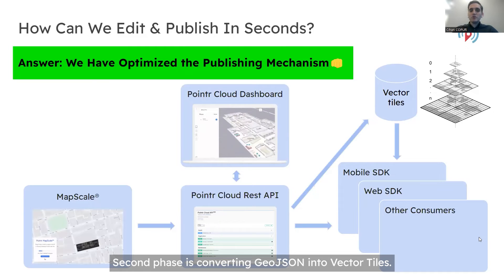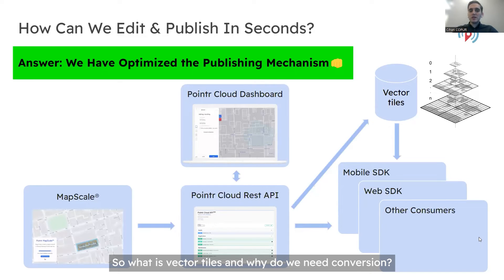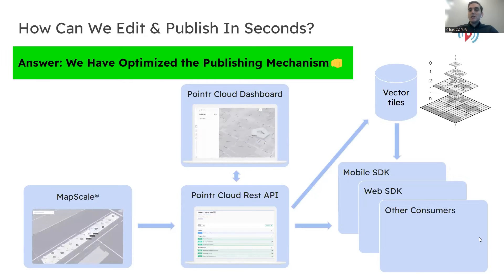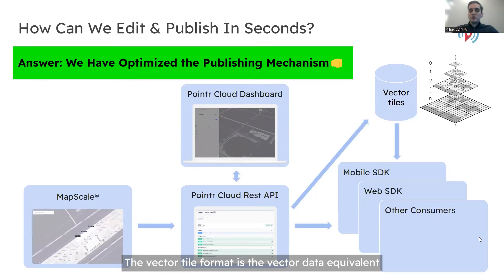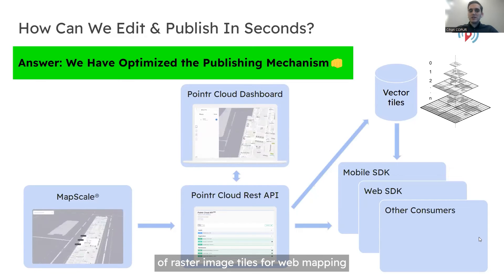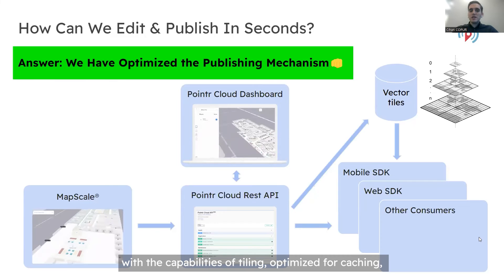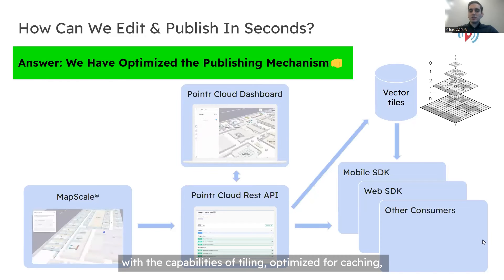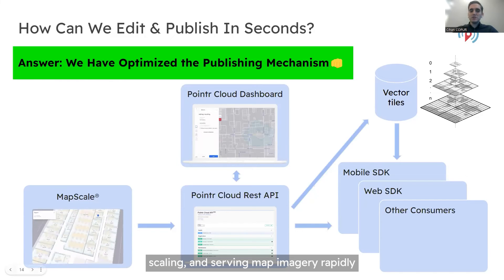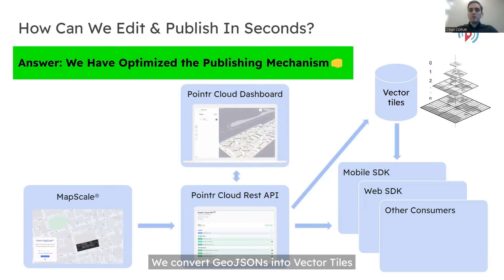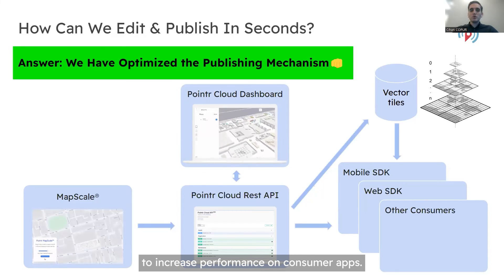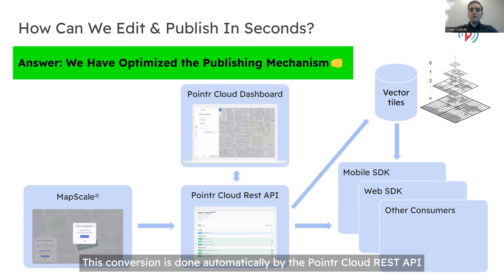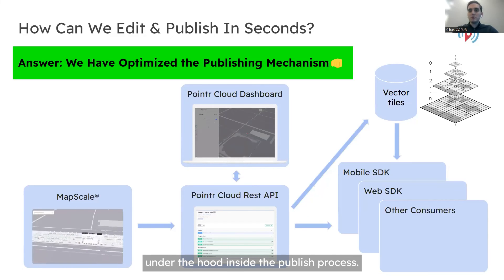The second phase is converting GeoJSON into vector tiles. The vector tile format is a vector data equivalent of raster image tiles for web mapping, with the strengths of tiling optimized for caching, scaling, and serving map imagery repeatedly. We convert GeoJSON into vector tiles to increase performance on consumer apps. This conversion is done automatically by the Pointer Cloud REST API under the hood inside the publish process.